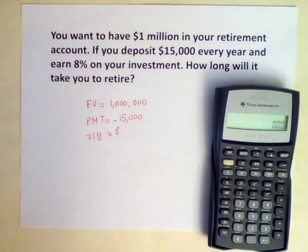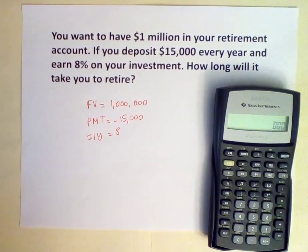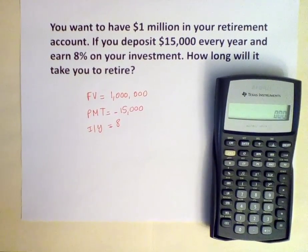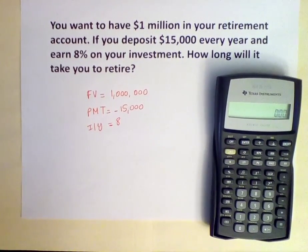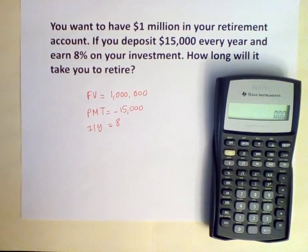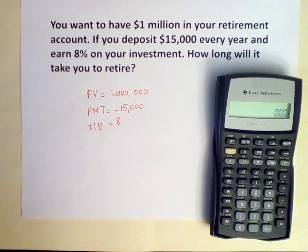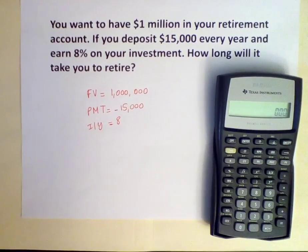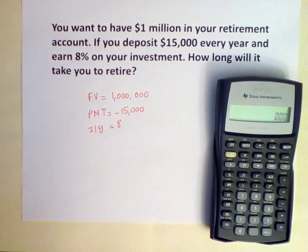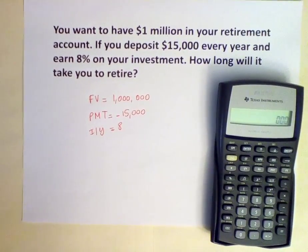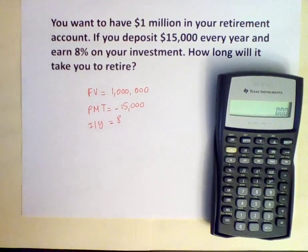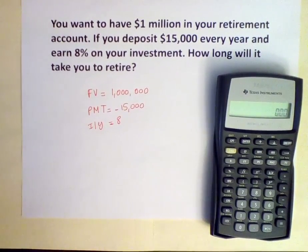First, we need to determine our inputs. We want to have $1 million in our retirement account — the future value, FV, is $1 million. We can deposit $15,000 every year, and we assume the deposits are made at the end of the year. The payment, PMT, is $15,000. Given that this is a cash outflow, we input it into the financial calculator as a negative number. The interest rate is 8%, so I/Y equals 8. If you input the future value as $1 million and the payment as $15,000 both as positive numbers, you will receive an error message. It is very important to have a cash outflow and a cash inflow in the financial calculator, and you depict the cash outflow using a negative number.